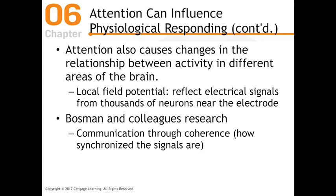We know it's not only important to look at the size of the physiological response, but what's really important is the relationship between the responses between areas of the brain. A local field potential is a response you can test by taking an electrode and placing it on the brain, getting electrical signals from clusters of several thousand neurons. You can see the patterns of firing of those groups of neurons and how closely related they are in terms of size, distance, and synchrony.